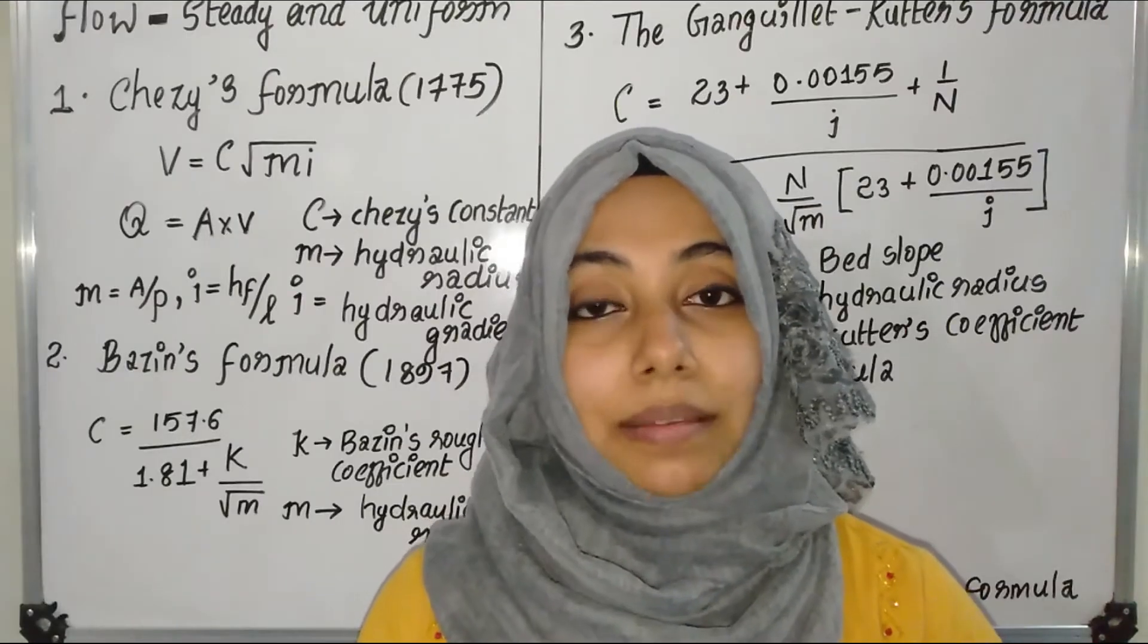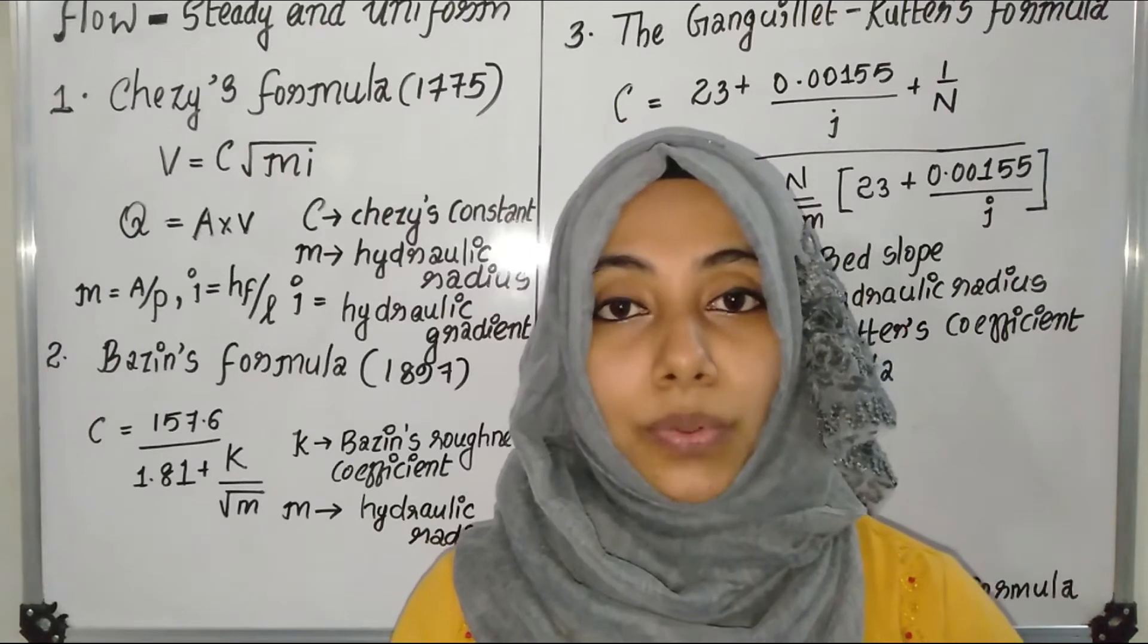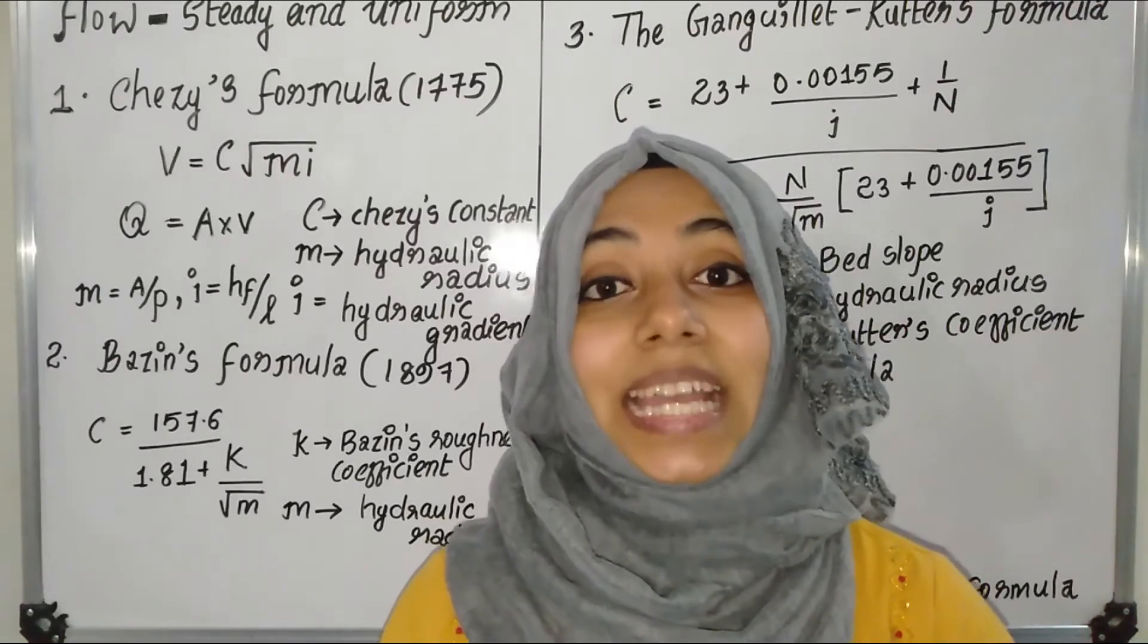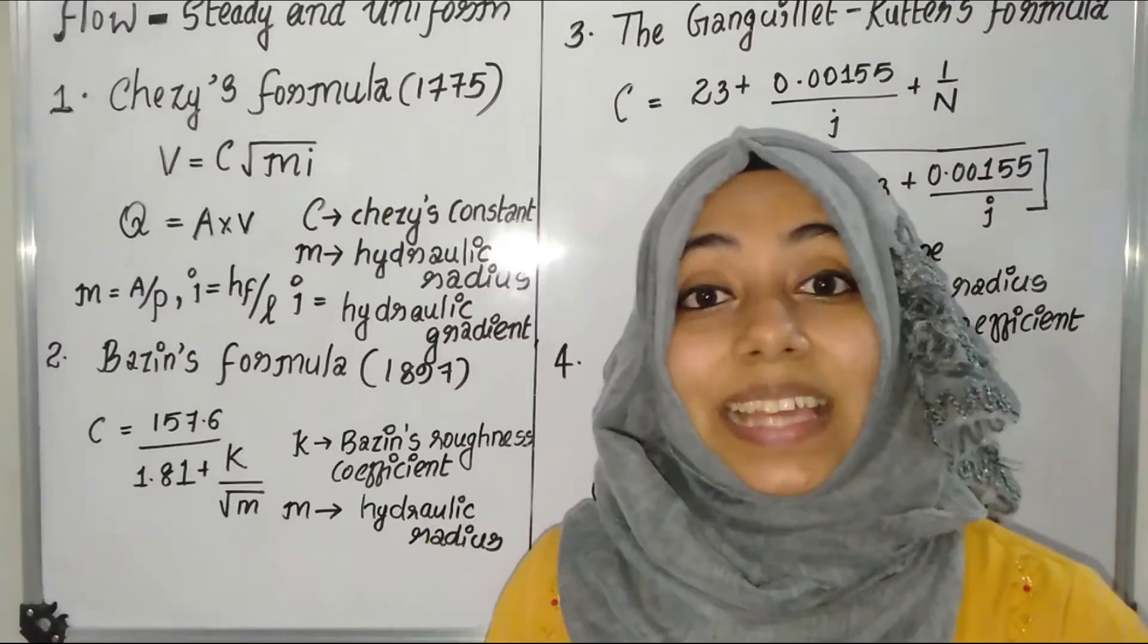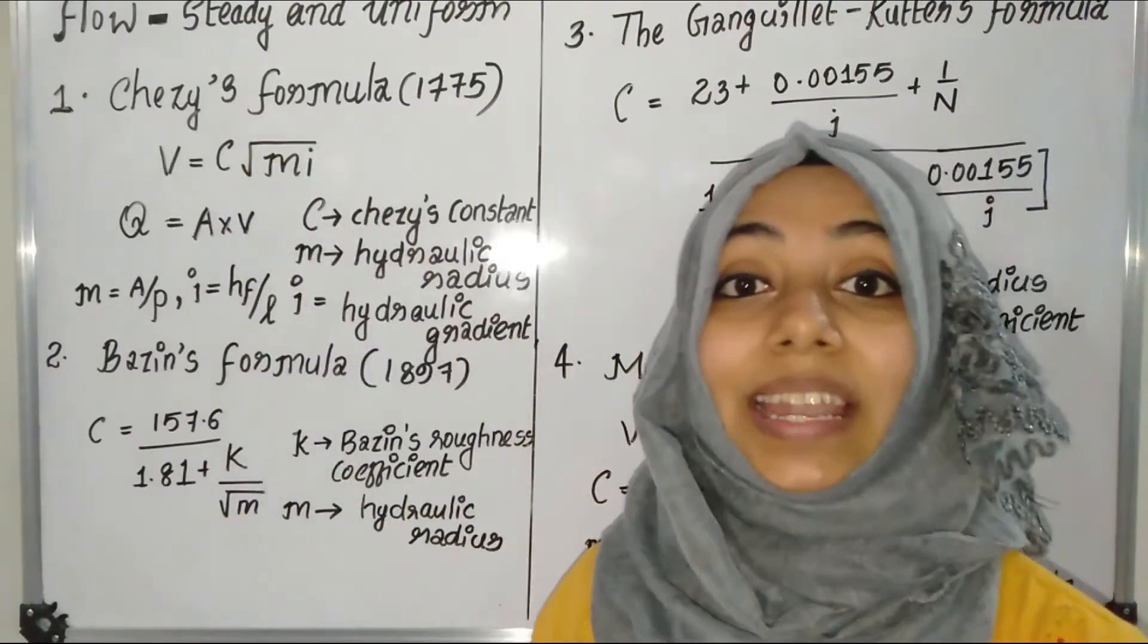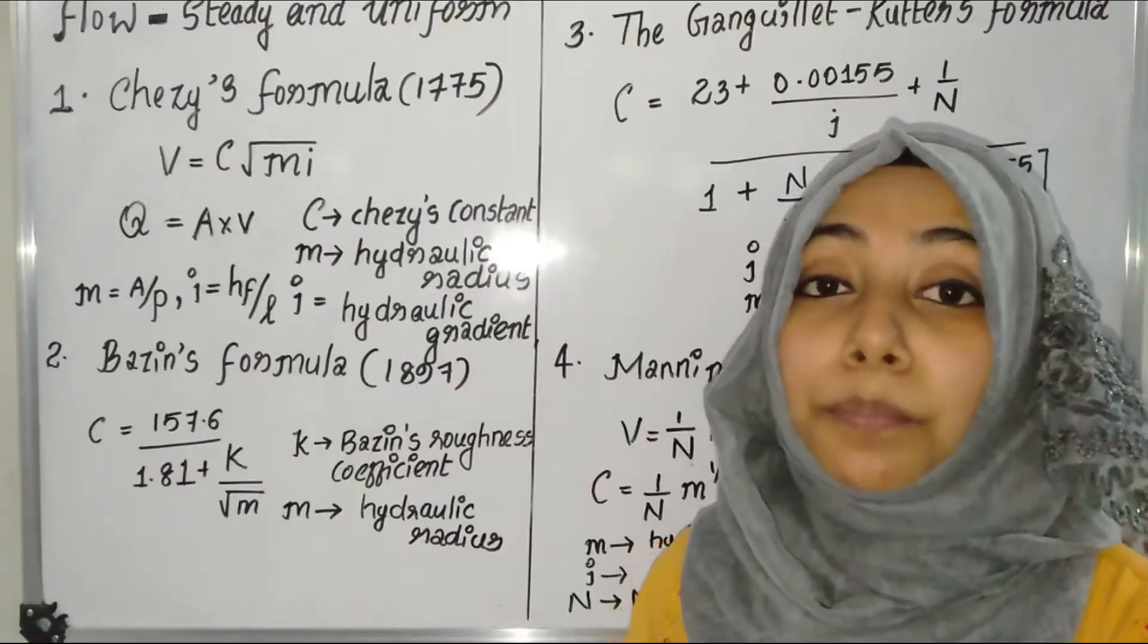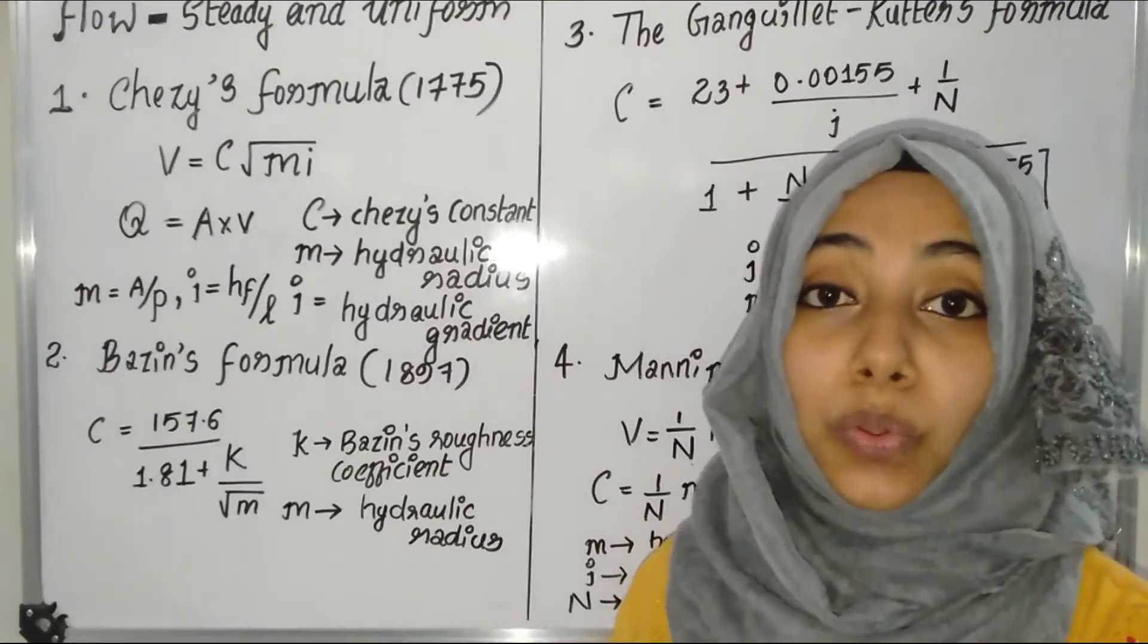Next three formulas are Bazin's formula, Kutter's formula, Manning's formula. These three formulas relate to Chezy's constant. In 1775, one French engineer derived Chezy's formula. In 1897, Bazin's formula was derived.